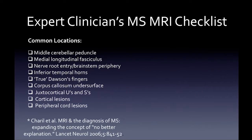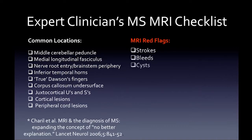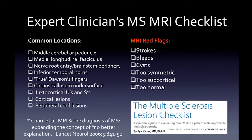The expert clinician's MS MRI checklist: common lesion locations include middle cerebellar peduncles and other cerebellar peduncles, the MLF, nerve root entry in the brainstem — particularly the trigeminal nerve root entry zone in the pons — inferior anterior temporal horn white matter, Dawson fingers, corpus callosum callosal-septal interface, juxtacortical lesions, cortical lesions from the revised criteria, and short-segment peripheral cord lesions.